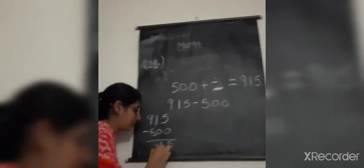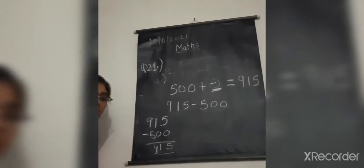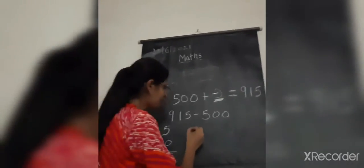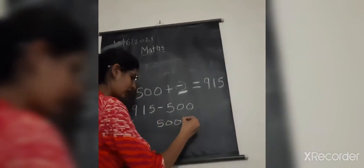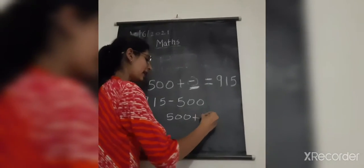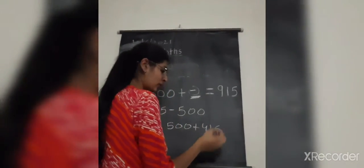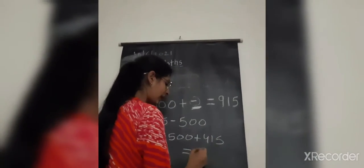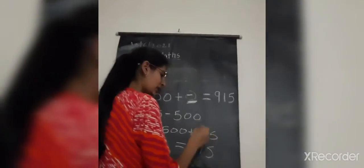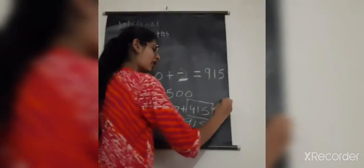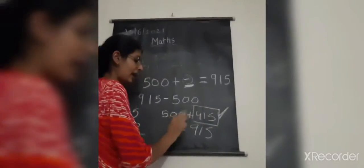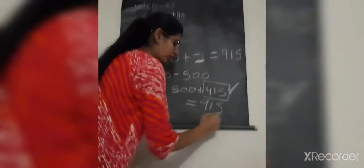The answer should be 415. If we add 500 and 415, we get 915. So the answer is 415 — you can add this and check it out.